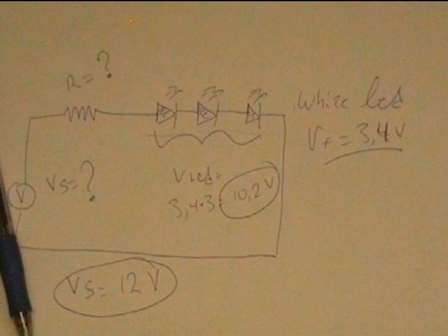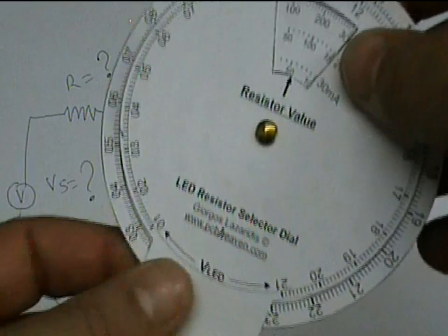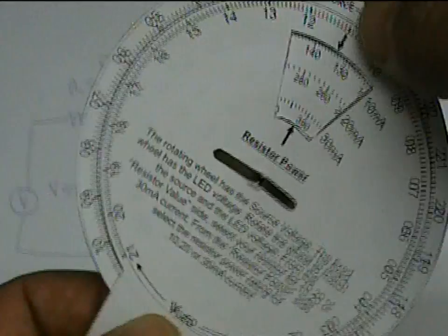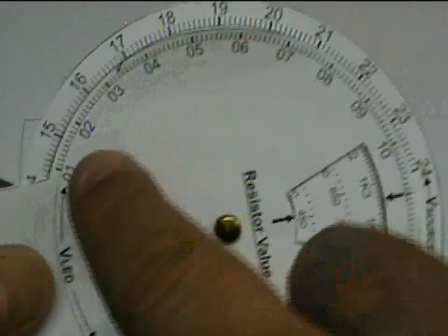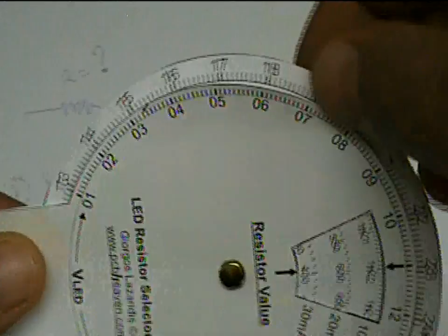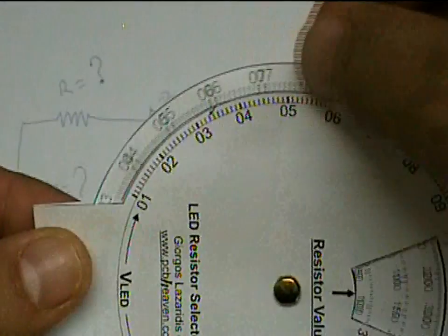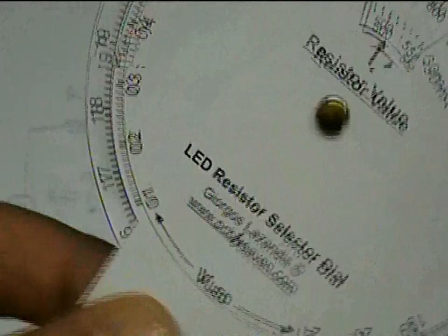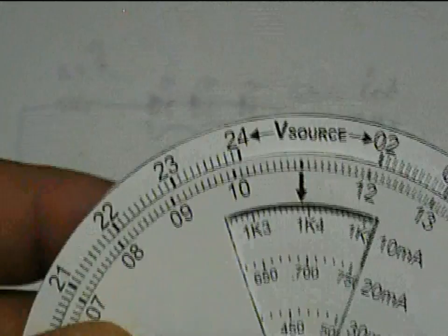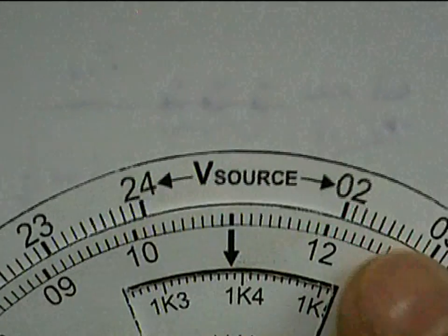And now let's use the resistor dial calculator to calculate the resistor value and power rating. There are two wheels on the selector. The internal wheel which is fixed and the external wheel which can be rotated. The internal wheel has values for the LED string voltage and the external wheel has values for the power supply voltage.